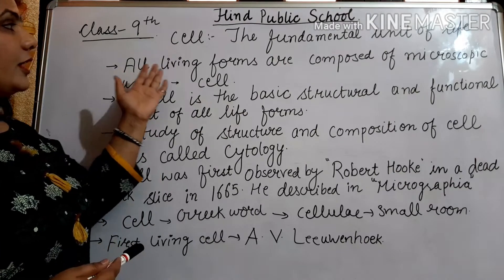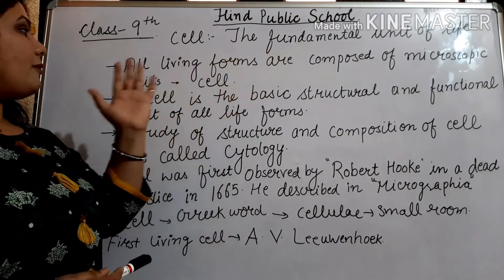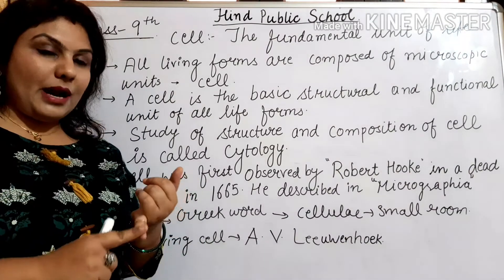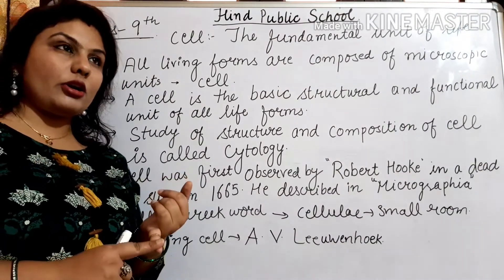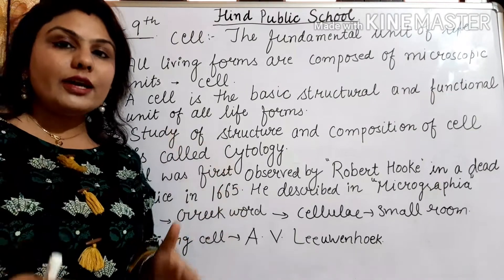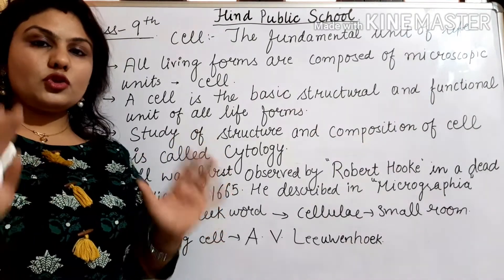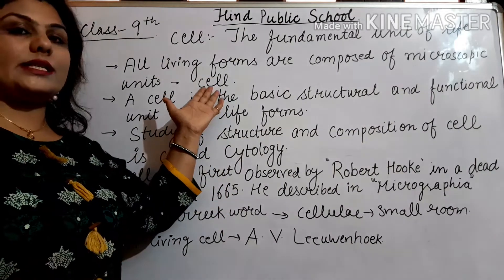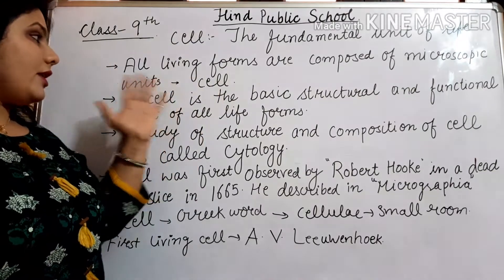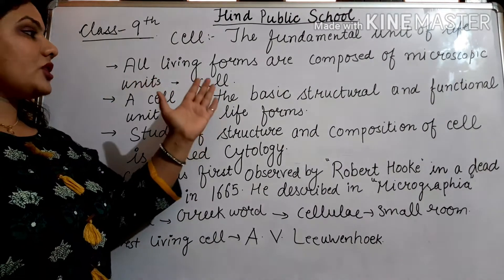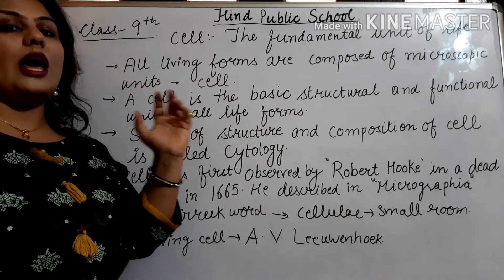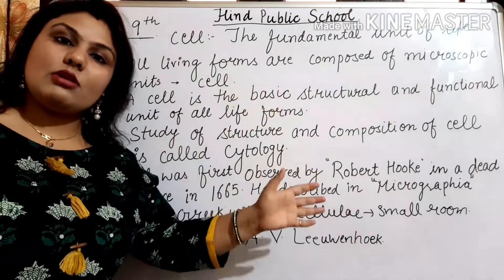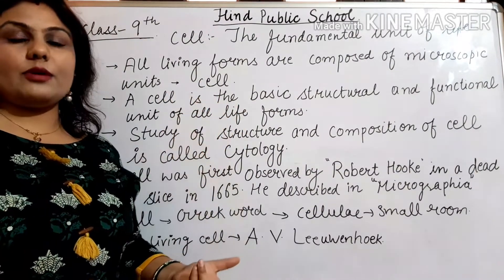So cell ki definition kya hai? All the living forms are composed of a microscopic unit that is called cell — whether they are human, whether they are plants, whether they are microorganisms. Everything that is living in this world. Cell is the basic structural and functional unit of all life forms, whether they are unicellular or multicellular. Bana kisse hua hai? Cell se hi bana hota hai.